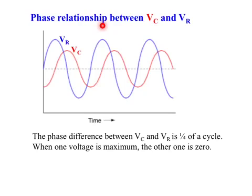Phase relationship between capacitor voltage and resistor voltage. From these two sine curves, you can tell that they are out of phase by a quarter of a cycle. When one is maximum, the other one is minimum or zero, and vice versa.